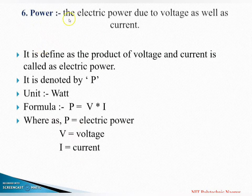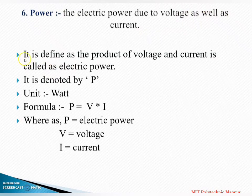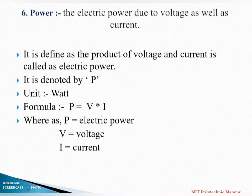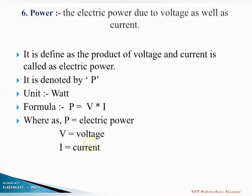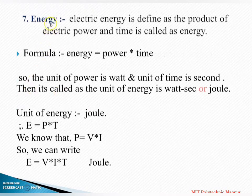Next definition is power. Electric power is due to voltage as well as current. It is defined as the product of voltage and current, called as electric power. It is denoted by P, unit is watt, and the formula is P = V × I, where P is for power, V for voltage, and I for current.